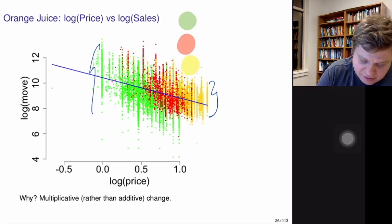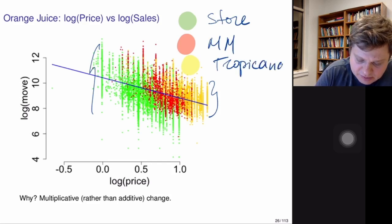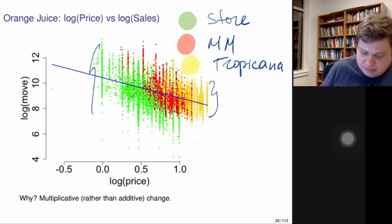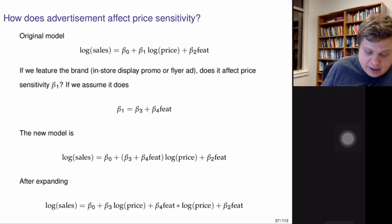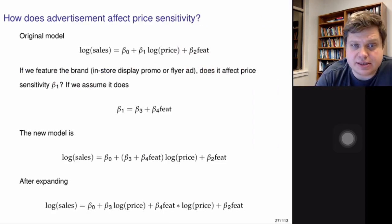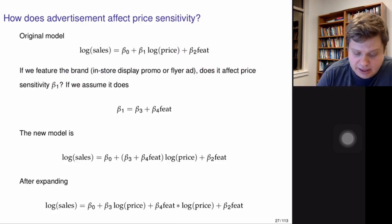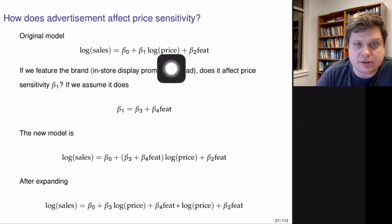There are three different colors representing three different brands: the green brand is the in-store brand, the red brand is Minute Maid Orange Juice, and the orange brand is Tropicana. Tropicana is the most expensive, Minute Maid is in between, and store brands are the cheapest of the three.